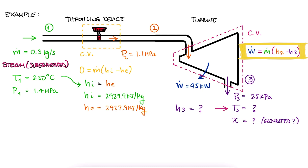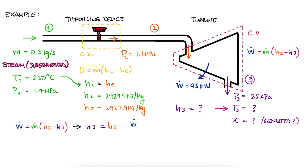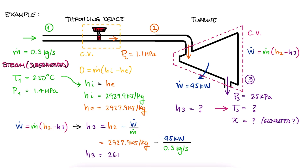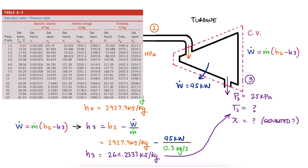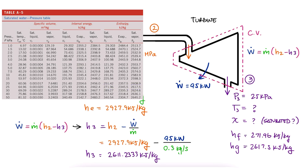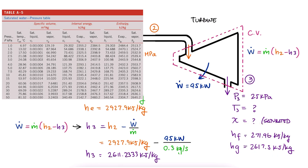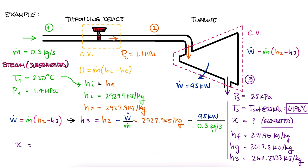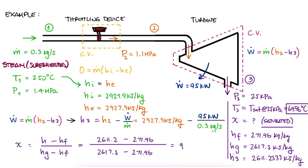For the turbine, the work out is mass flow rate times the enthalpy change. Since the work output is given, we solve for H3. With the mass flow rate being 0.3 kg/s and the work output being 95 kW, we find that H3 is equal to 2611 kJ/kg. Going to the saturated liquid-vapor tables for a pressure of 25 kPa, hf is 272 kJ/kg and hg is 2617 kJ/kg. Since H3 falls between these values, the water at the exhaust of the turbine is a saturated liquid-vapor mixture. This means the temperature is the saturation temperature at 25 kPa, which is 64.96°C, and the quality is approximately 99.7%.